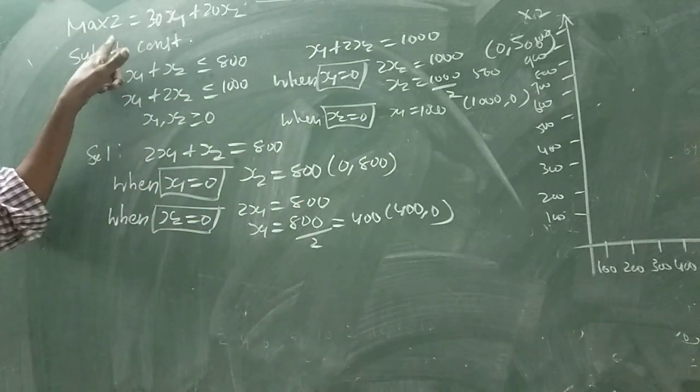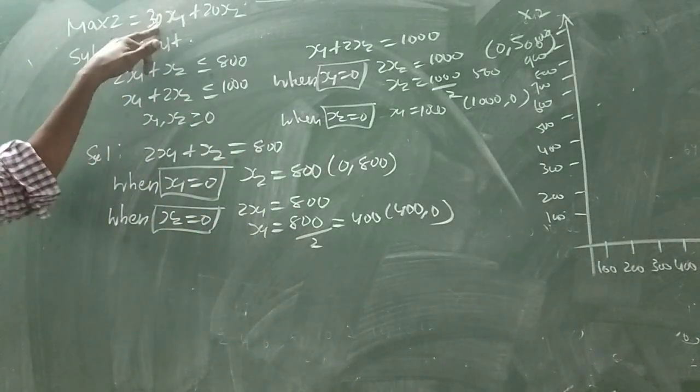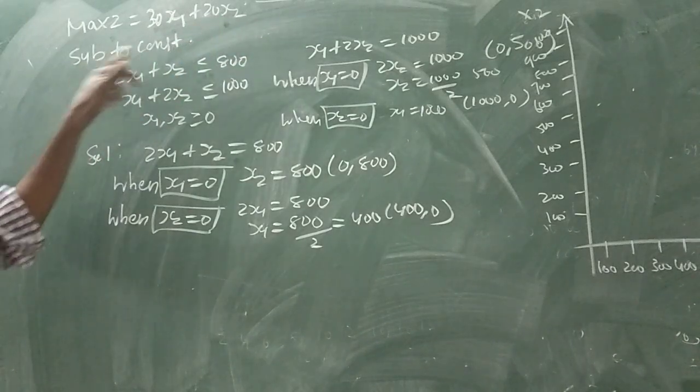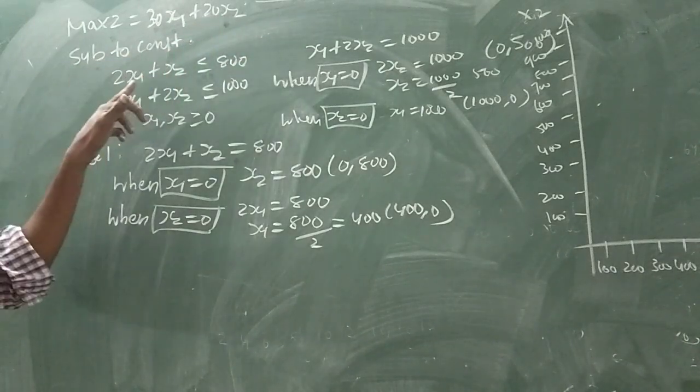So this is the question. Maximize Z equal to 30x1 plus 20x2, subject to constraints.